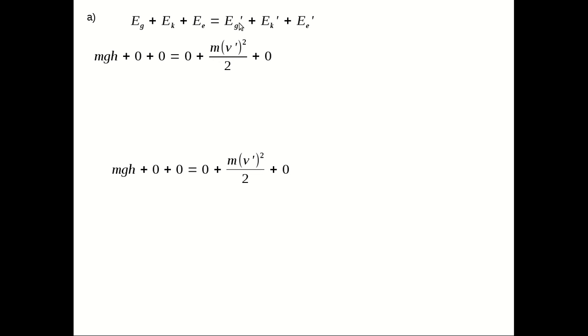Notice that we've written primes. These tick marks are called primes, and that means after. So that's our gravitational potential energy after, Eg prime. Same with the kinetic energy after, elastic potential energy after. So v prime is the speed after, which in this case is at point A.